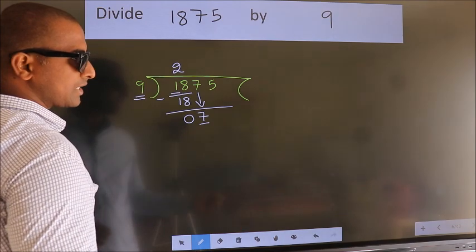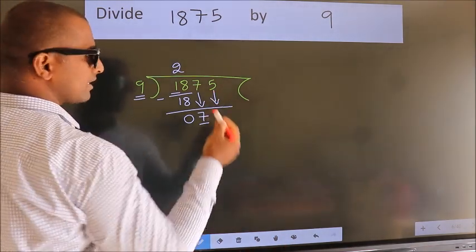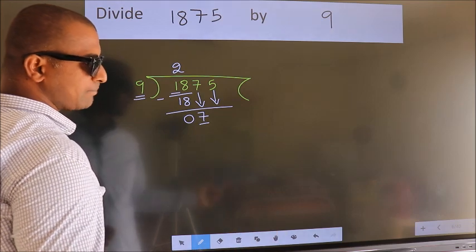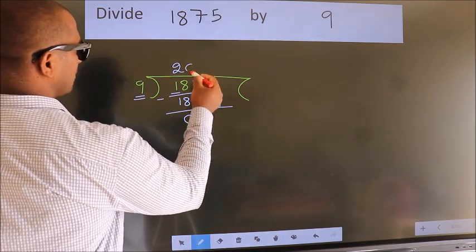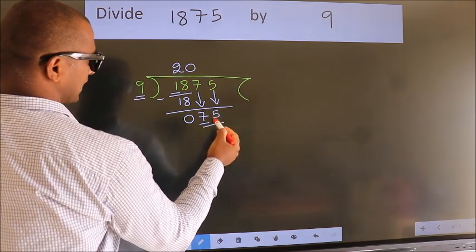So we should bring down the second number. And the rule to bring down the second number is put 0 here. Then only we can bring down this number. So, 75.